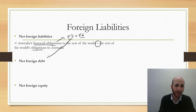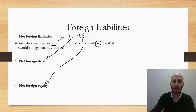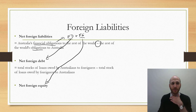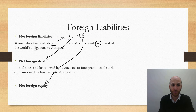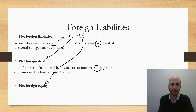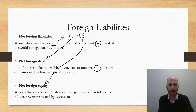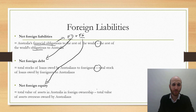We can see we've got foreign debt and foreign equity. Foreign debt is all about loans and borrowing. Net foreign debt is the total stock of loans owed by Australians overseas minus the total stock of loans owed by foreigners to Australians — that's a minus sign, so we're looking at the net position. In terms of foreign equity, it's the total value of assets in Australia owned by foreigners minus the total value of foreign assets owned by Australians.